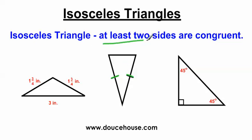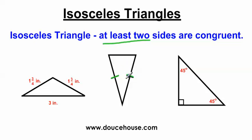It says at least two sides are congruent, so that means we can have more than two sides congruent and still be an isosceles triangle. So let's say all three sides had one tick mark — all three sides are congruent to each other. Is this still an isosceles triangle? Yes, because it has at least two sides that are congruent. But there's a better name for this triangle: an equilateral triangle. So whenever we're naming triangles, it's best to use the best name. We generally reserve isosceles for triangles with exactly two congruent sides, and equilateral for triangles with three congruent sides.